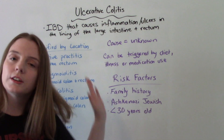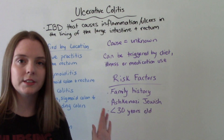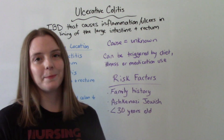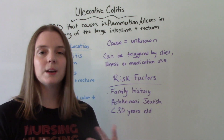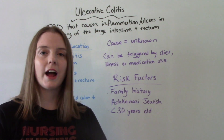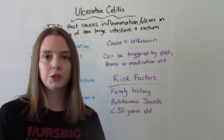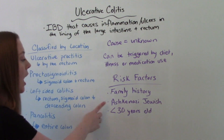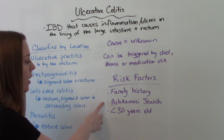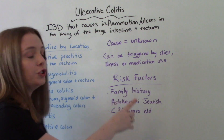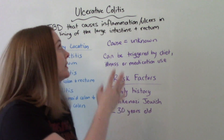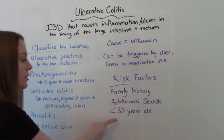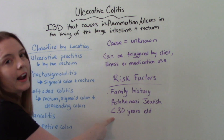Certain groups of people are at higher risk. The big one is family history — if a first degree relative has it, you are more likely to have it. Certain populations, like Ashkenazi Jewish people, are also more likely to have ulcerative colitis. And this is usually diagnosed before age 30.